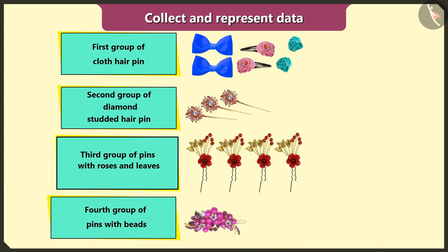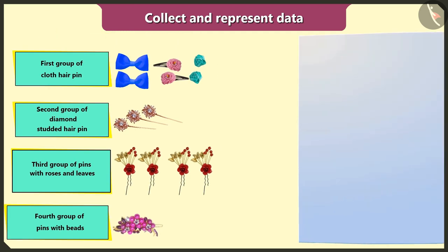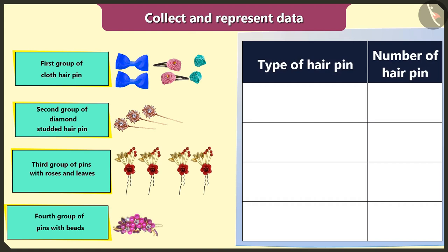Now I will count the hairpins in each group. I have six hairpins made of cloth, three diamond studded hairpins, four hairpins with roses and leaves, and one big hairpin with beads. Now I will represent all the data by making a table like this.